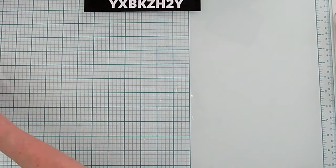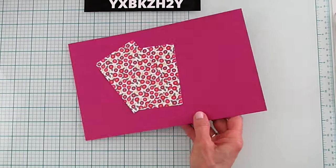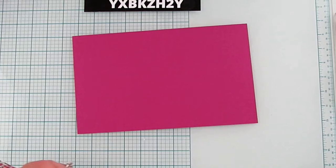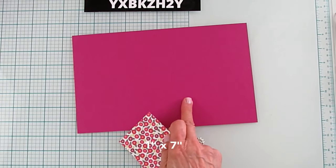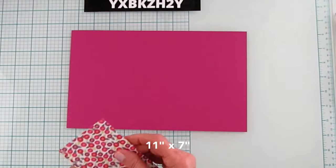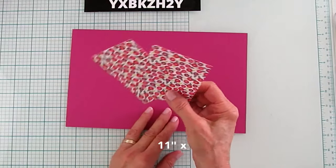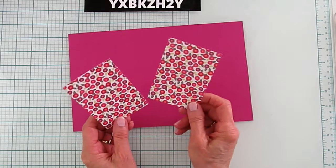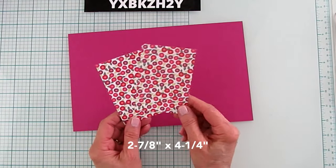All right, so to start with, you'll need a piece of, this is Berry Burst I'm using for this. And this piece is 11 by 7. And then you need two mat pieces, which I'm matting the back on this and you'll see why in a minute. And these are 2 and 7/8 by 4 and a quarter.